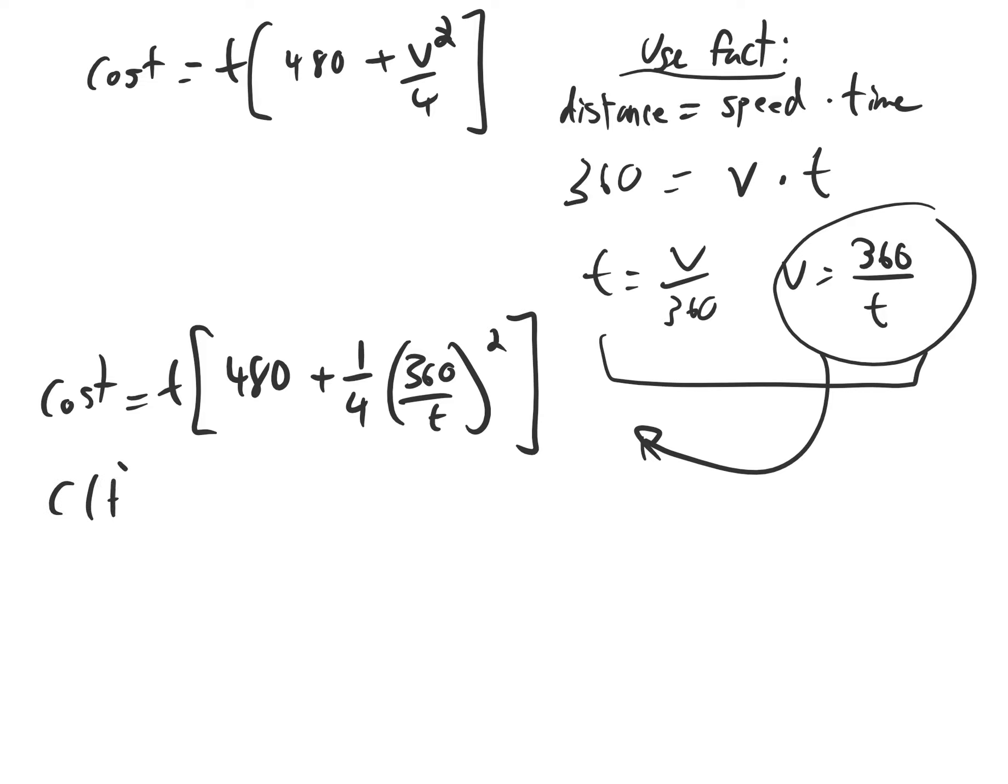Now I have c of t as the cost as a function of just one variable time. If I distribute this t, I get 480t plus 1 fourth times 360 squared. And then when we distribute this t, it'll cancel one of the t's in the denominator here. So times 1 over t. This is better because now we can do calculus on this equation because it's an equation with just one variable.